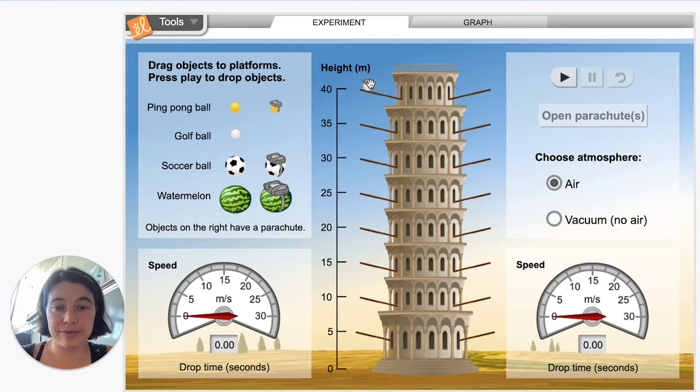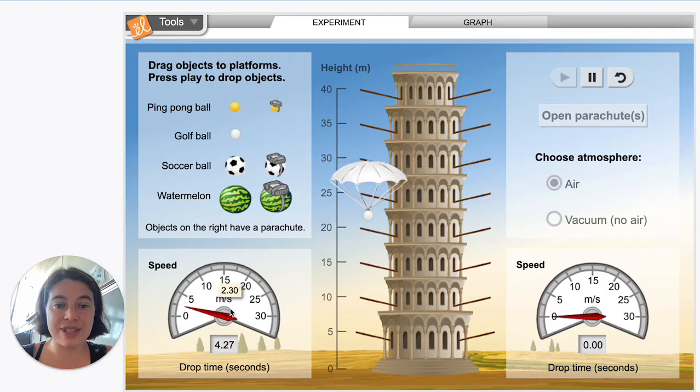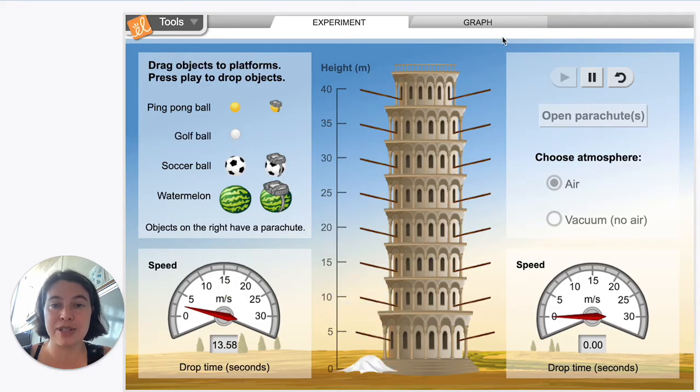For the golf ball, if we send that down and open the parachute, again, you can see as soon as that parachute is opened up, it slows down dramatically. And now it is going 2.30 meters per second.